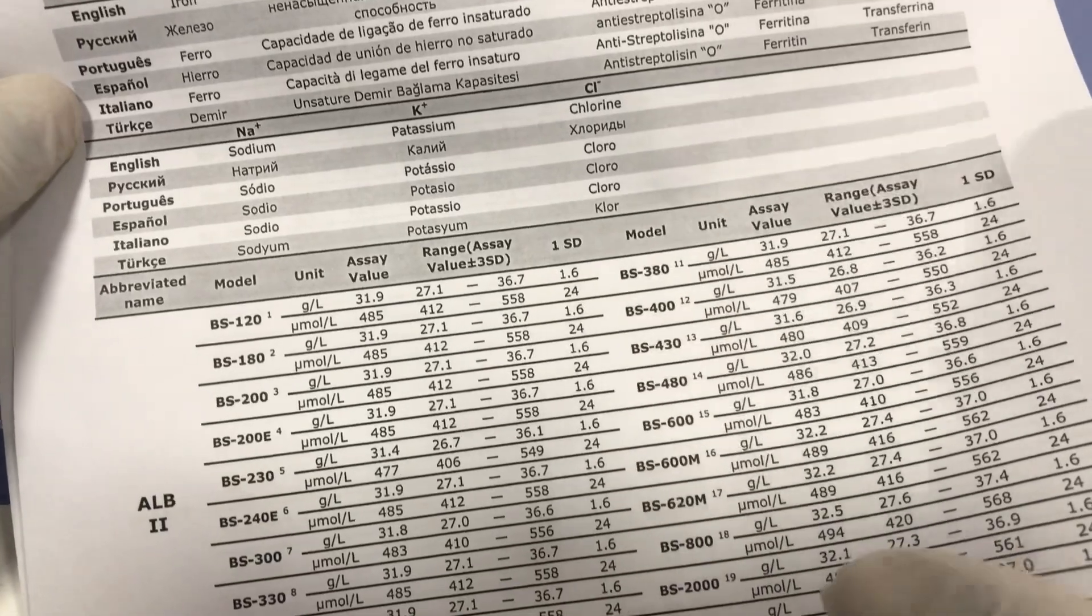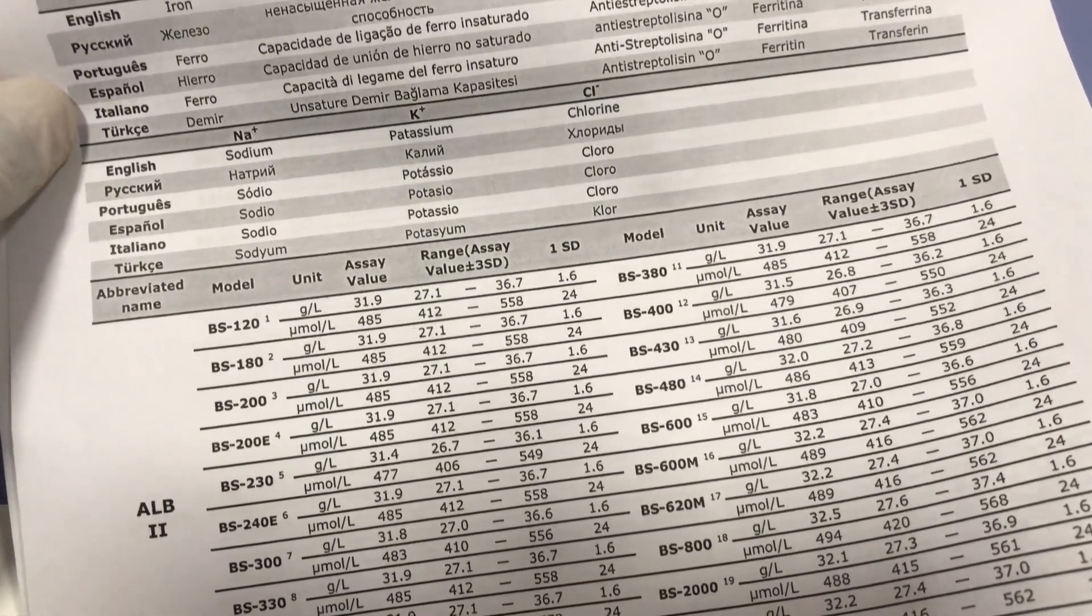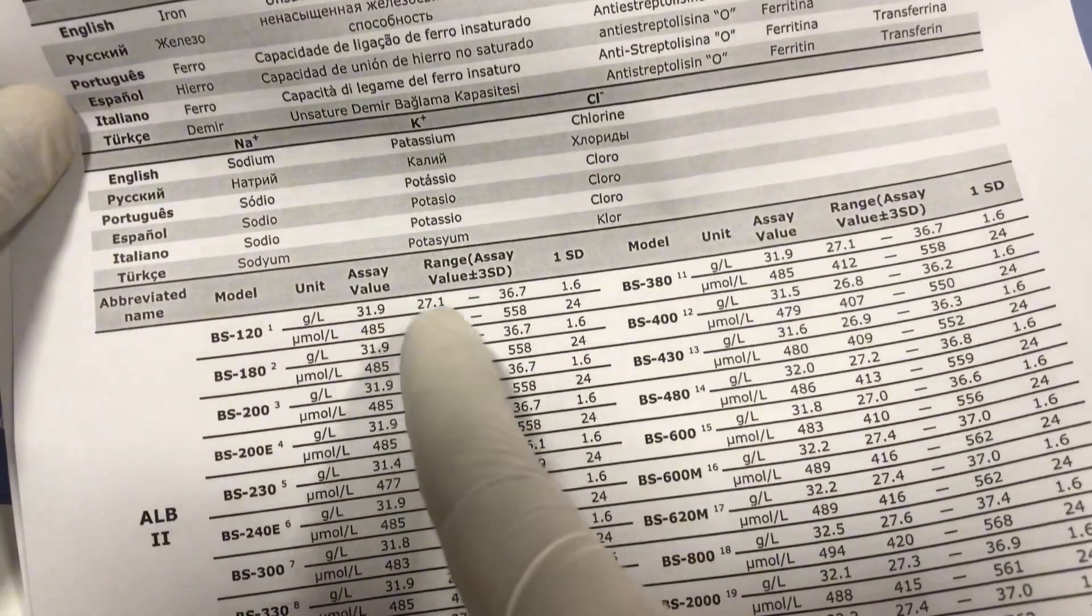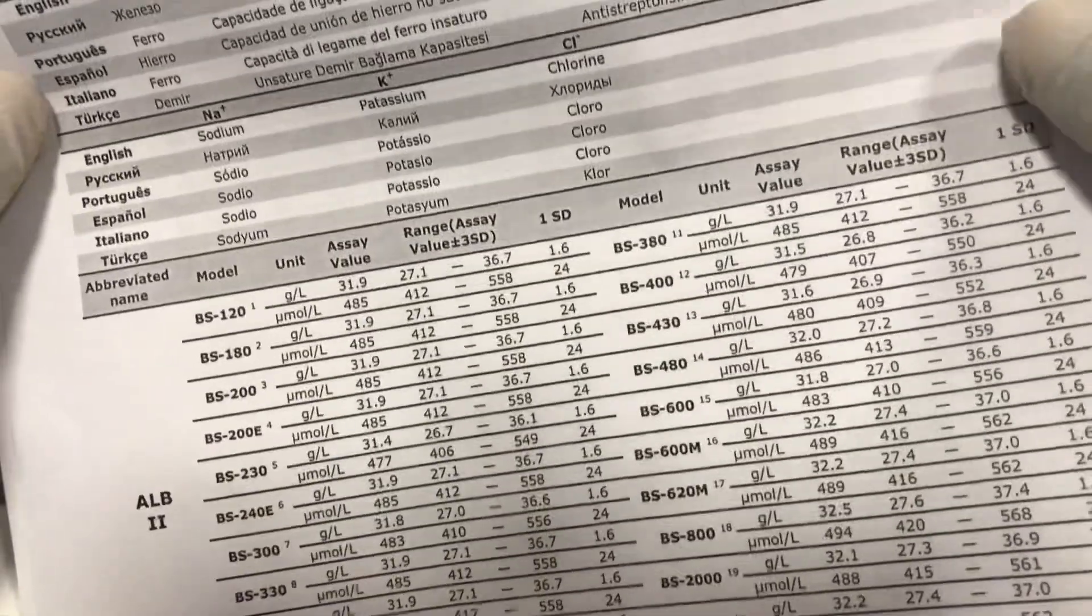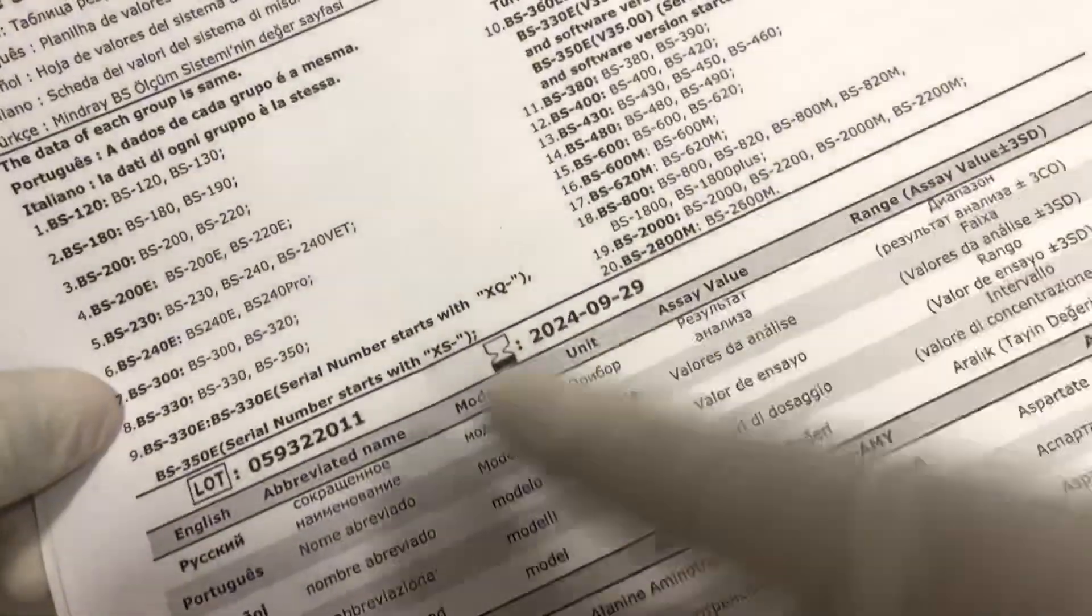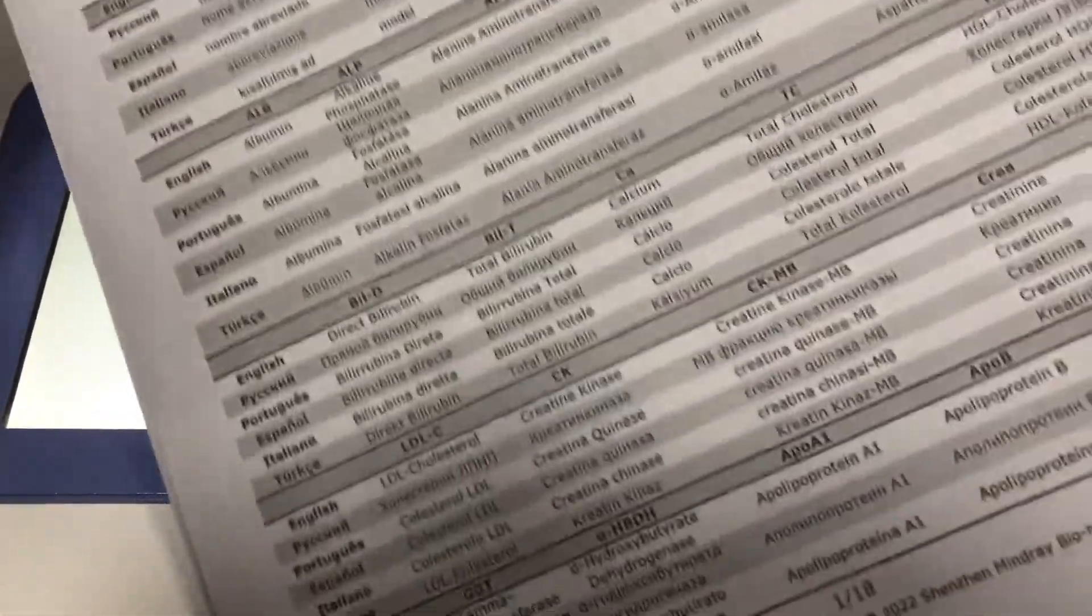When you run your quality control sample and it's giving you something like that, the same or anything around this, then you know that your system is okay and it will produce a quality result. This is the sheet you can get from the Mindray site - this is control level one with the lot number and expiry date. It's the same thing for control level two.